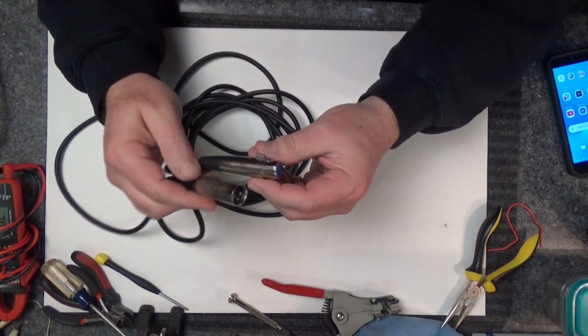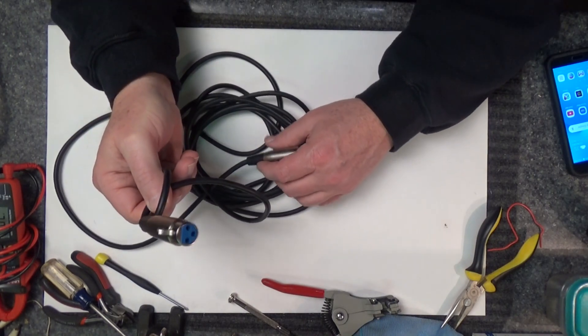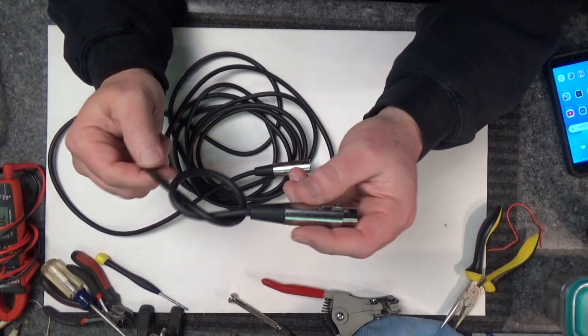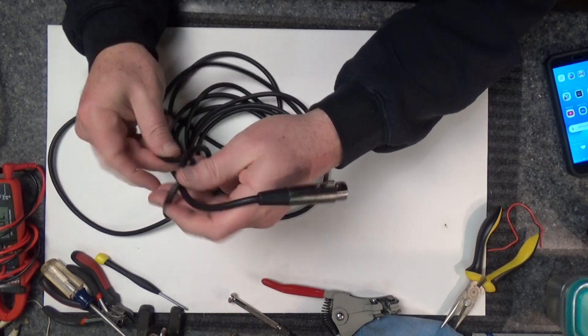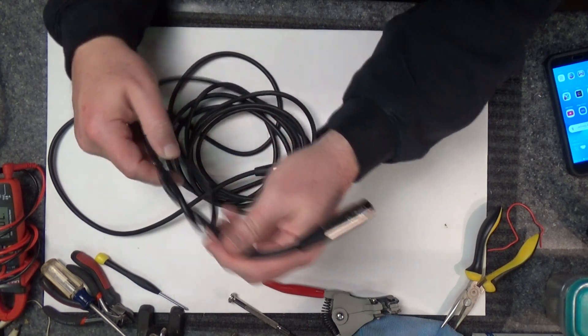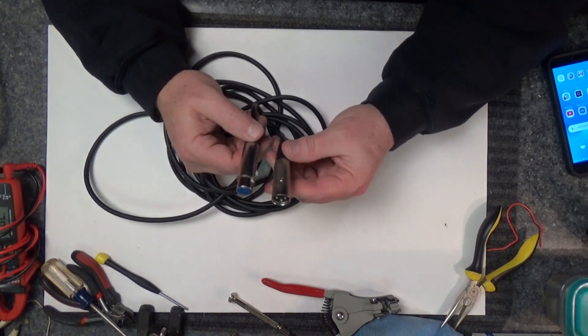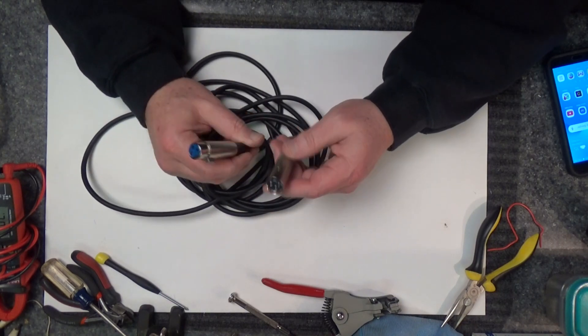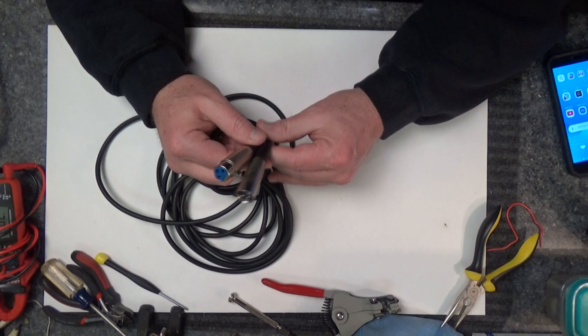He thinks it's this end, the female end, so I put a knot in it to remind myself. It probably is this end because this is the end that gets unplugged and plugged in many times. So what we're going to do first is take the ends off and inspect the cable and make sure it's not in the ends before we get going on the wire.